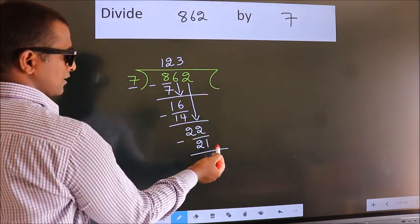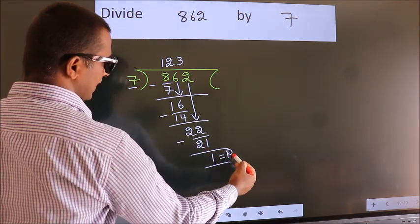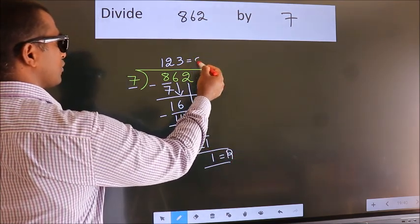No more numbers to bring down. So we stop here. This is our remainder. This is our quotient.